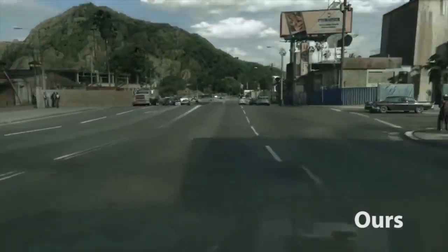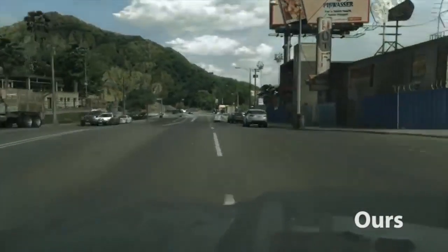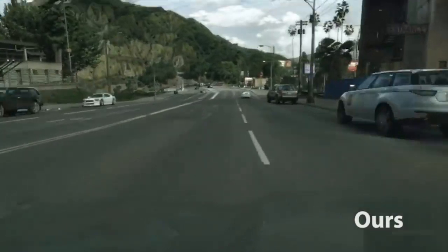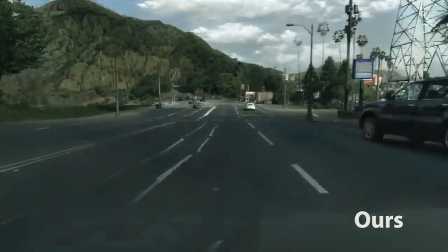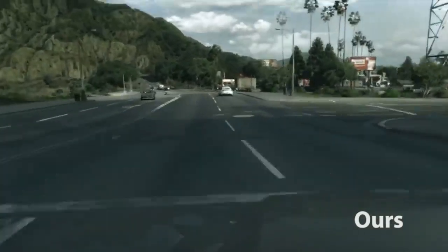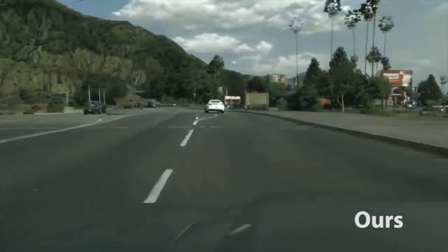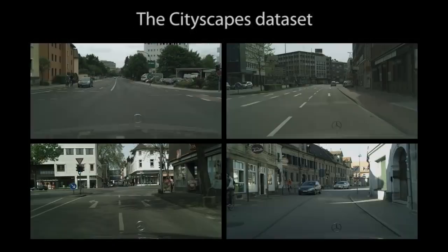This model was trained to translate GTA V to the Cityscapes dataset. Cityscapes contains mostly images of German cities recorded with an automotive-grade camera. Here are a few examples from the dataset.